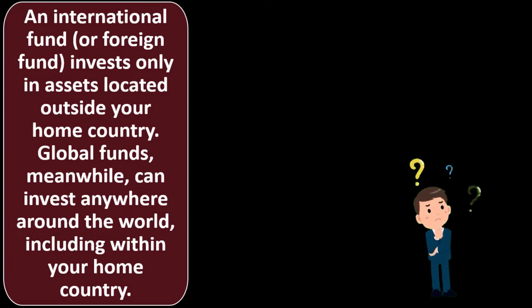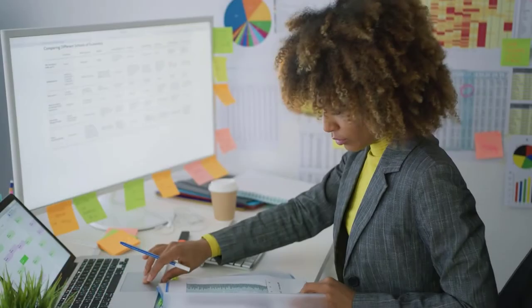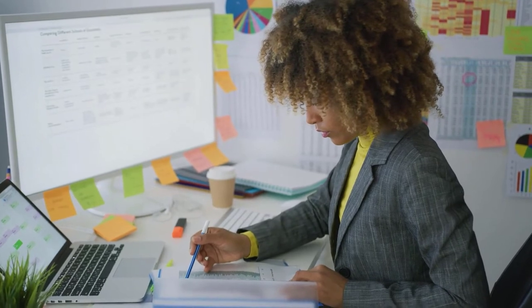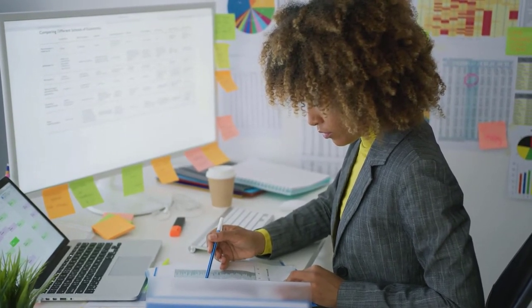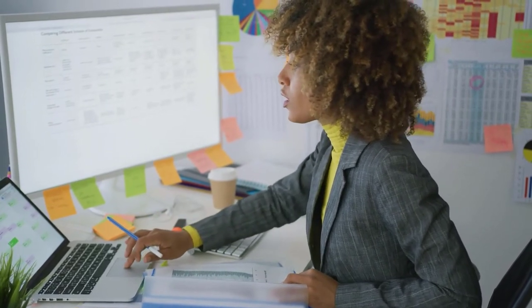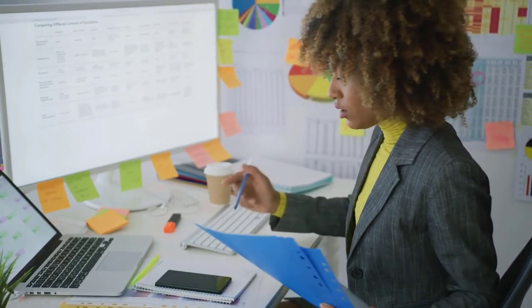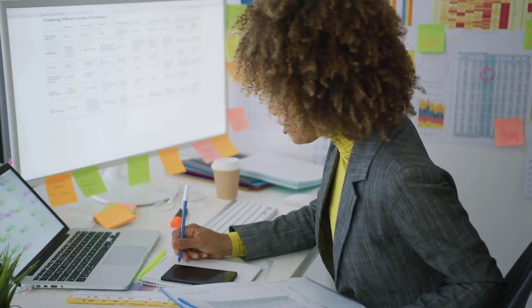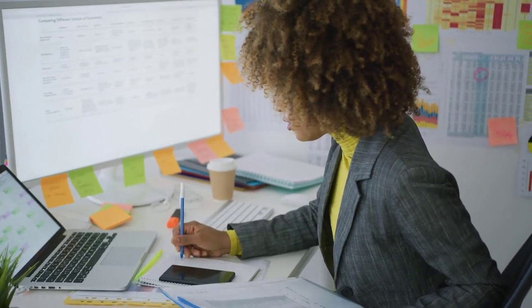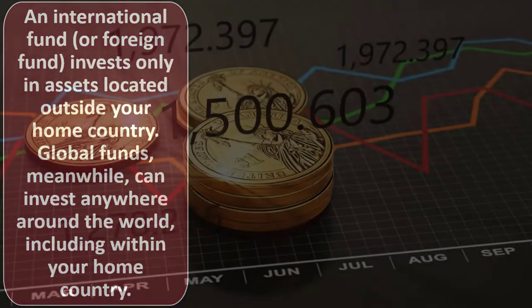An international or foreign fund invests only in assets located outside your home country, while global funds can invest anywhere around the world, including within your home country. If you're in the United States, you might want access to funds outside the U.S. specifically and can determine what percentage you'd want outside. If all your holdings are within the U.S., you might pick a fund with holdings specifically outside the U.S. to get that kind of diversity, or pick a fund that has a mix weighted heavily in the U.S. with some international exposure.